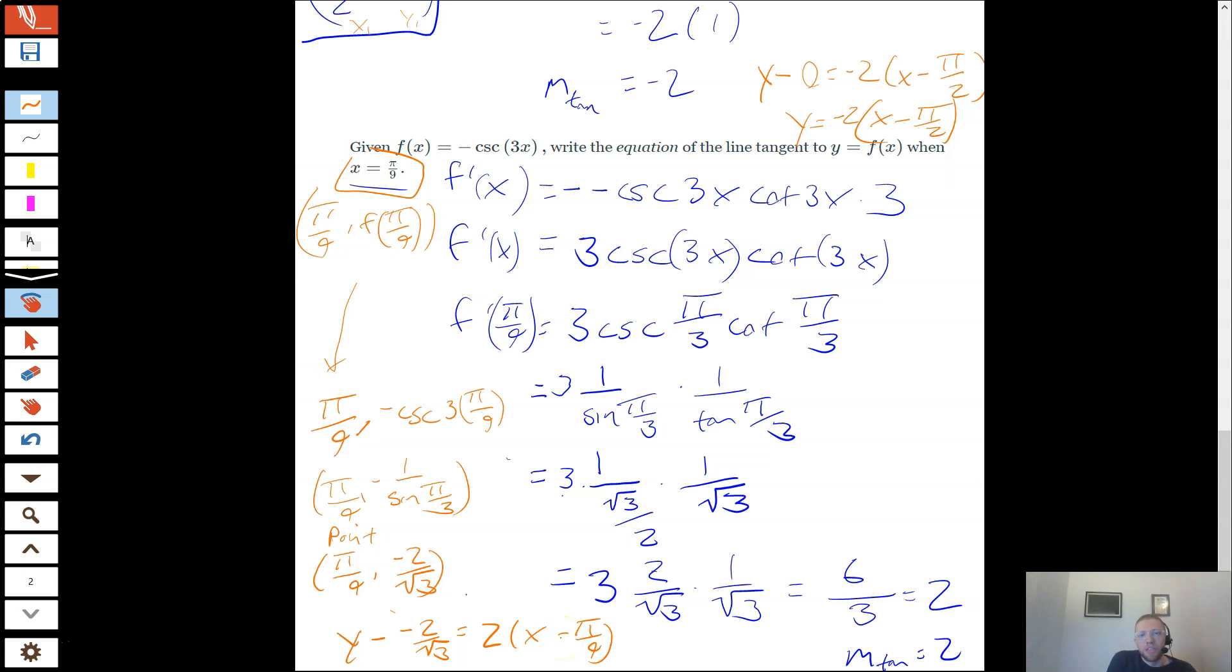So that is that. Again, this one's quite a bit spicier than the last one. It's what we've always done using derivatives to find equations of tangent lines, though. So find the derivative, plug in your point, and then plug in the slope you get and the point from the original function into a linear equation, and you're good to go.